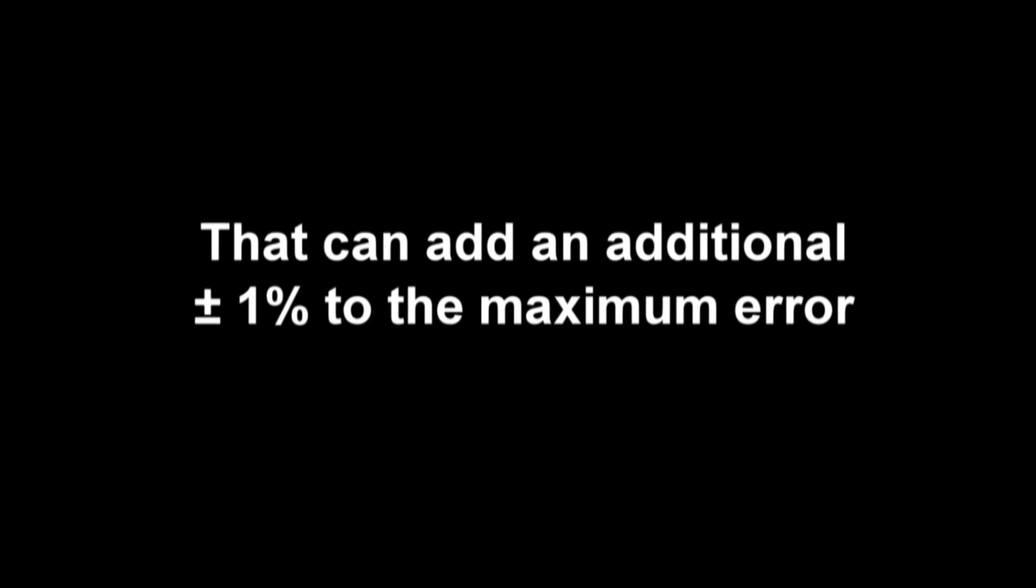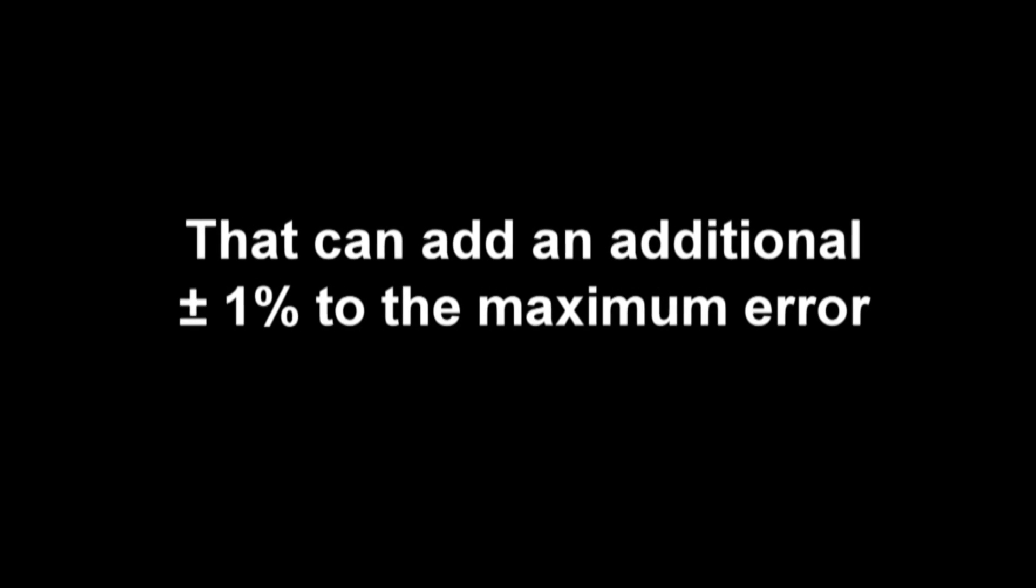Everything I've said until now is for the conditions calibrated. In addition to this, if measurement is at a different power value than we calibrated it, there can be an additional error in reading due to non-linearity. That can add as much as plus or minus 1% to the maximum error. That error is usually the most near the highest measurable power and when the sensor gets hot.